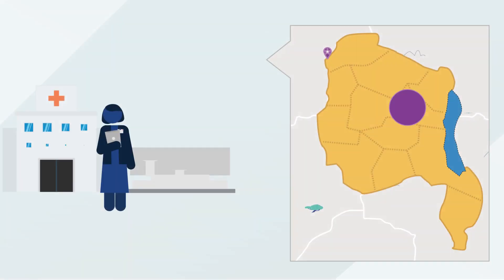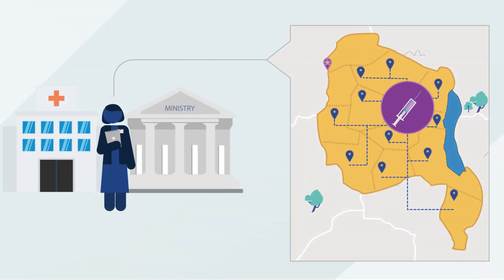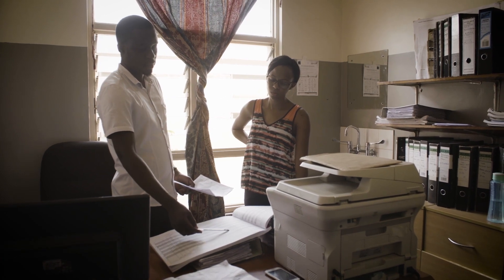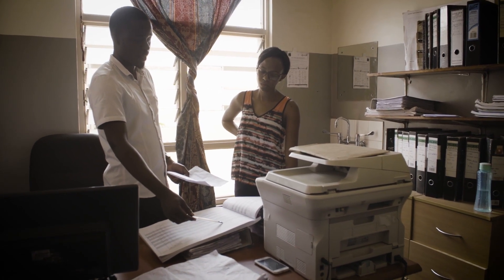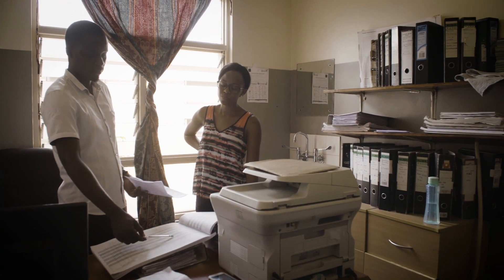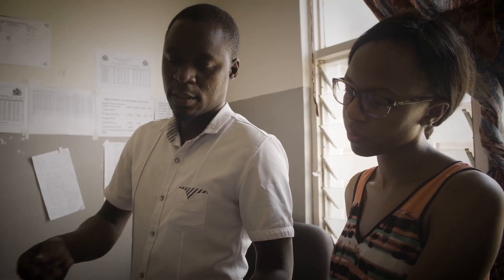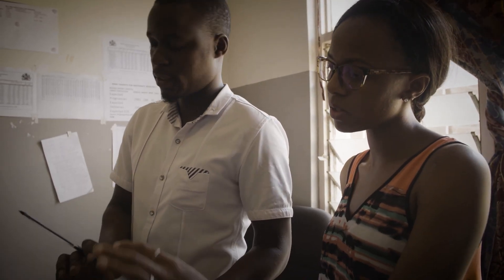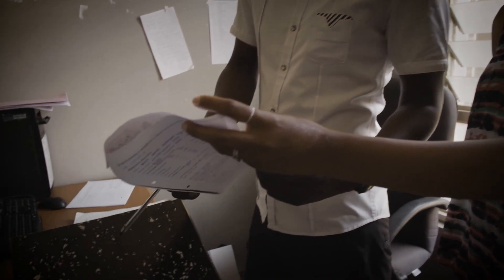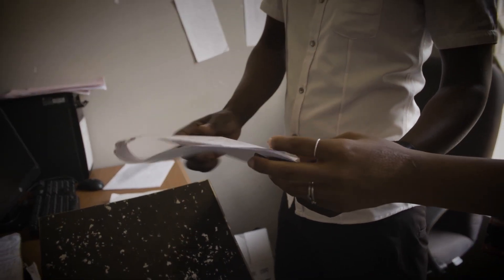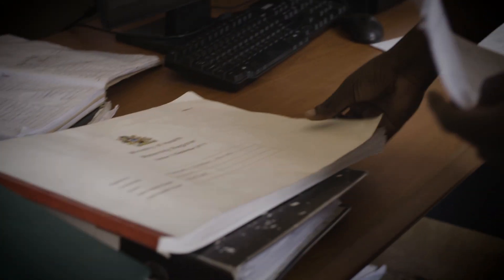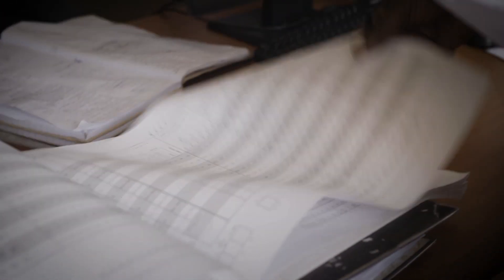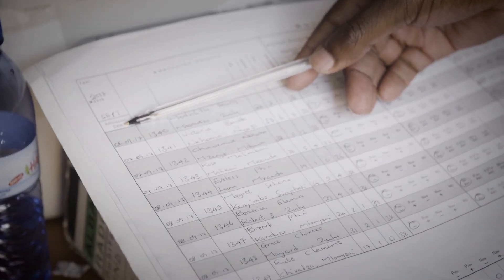Dr. Banda oversees her country's immunization program. She needs to know how many unvaccinated children live in each district and how many vaccines are available in each facility, so that she can make informed decisions as she plans the next immunization campaign. When this information is stored in different systems or written down on paper, she is unable to assemble all the information she needs in time, which makes planning and implementing an effective campaign impossible.